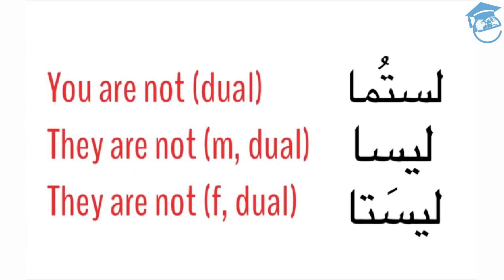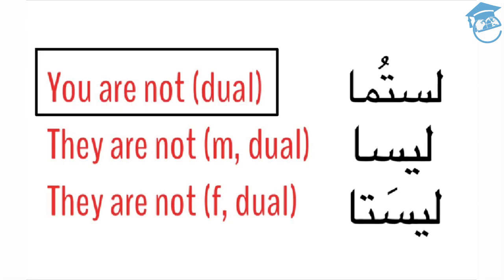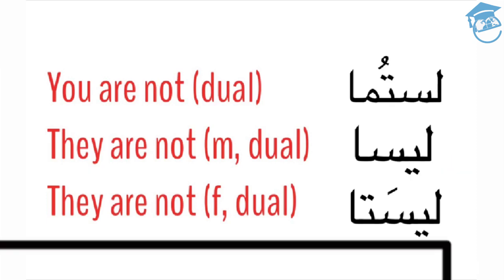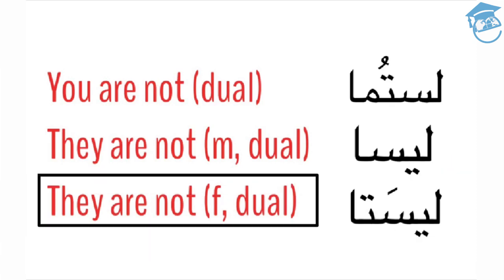To complete the conjugation, we need to look at the dual. Remember that any time you have two of something in Arabic, you need a special word. To say 'you two are not,' dual, we say lastuma. To say 'they are not,' dual masculine, we say laysa. And to say 'they are not,' female dual, we say laysata.